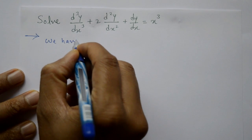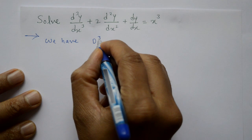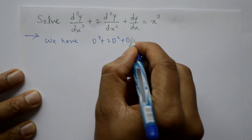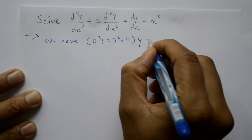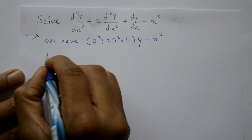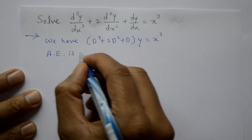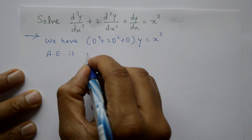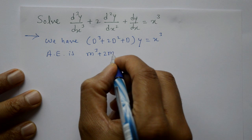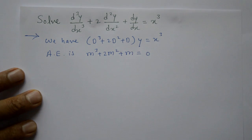We have (D³ + 2D² + D)y = x³. Now find auxiliary equation roots. The auxiliary equation is m³ + 2m² + m = 0.